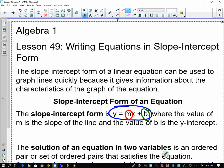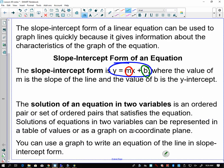The solution of an equation in two variables is an ordered pair, an x-y coordinate, with an x value and a y value. Or a set of ordered pairs that satisfies the equation. We can have more than one ordered pair that's going to satisfy it.